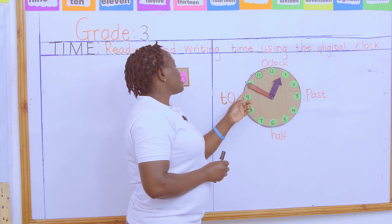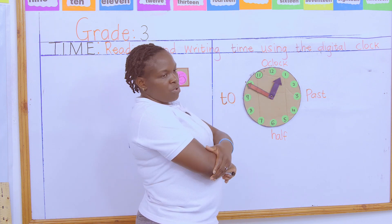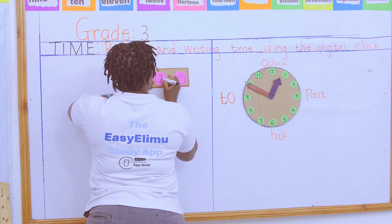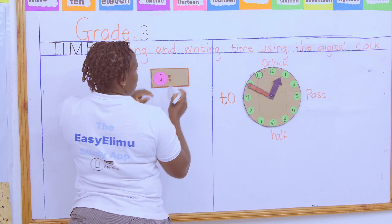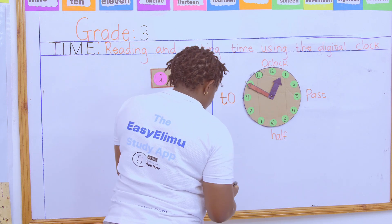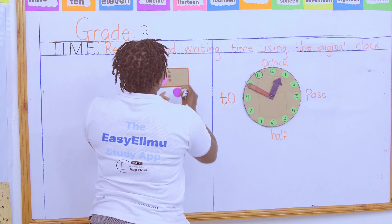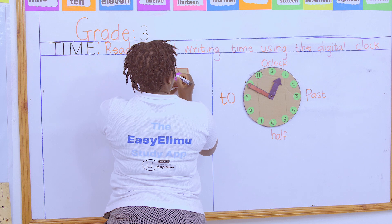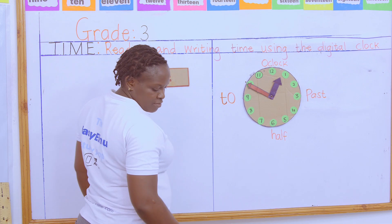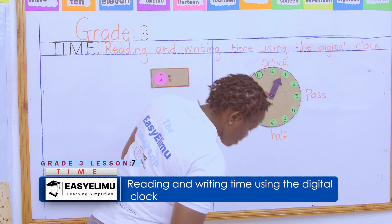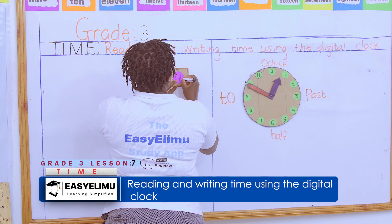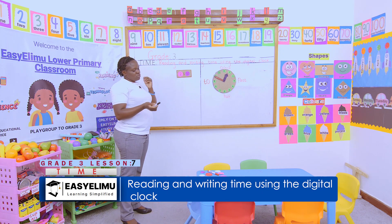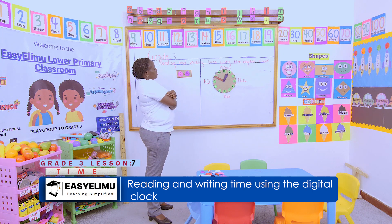It is telling us that there are remaining five, ten minutes to one — ten minutes to one. So the time is twelve fifty. Remaining ten minutes — twelve fifty. That is exactly what you're supposed to do when you're told to represent the time using the digital clock face.